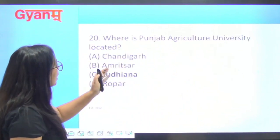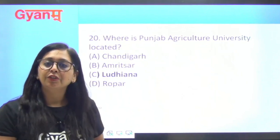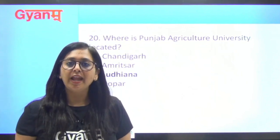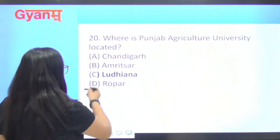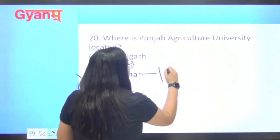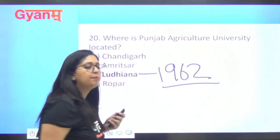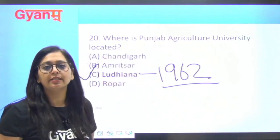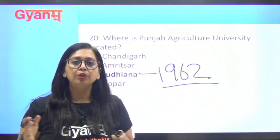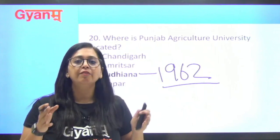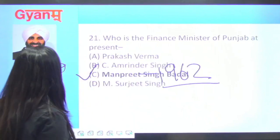Next question: where is Punjab Agriculture University located? Punjab Agriculture University (PAU) is in Ludhiana. Another common follow-up question is when it was established — it was established in 1962.